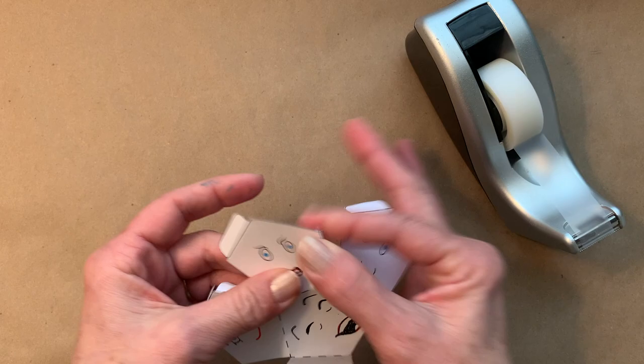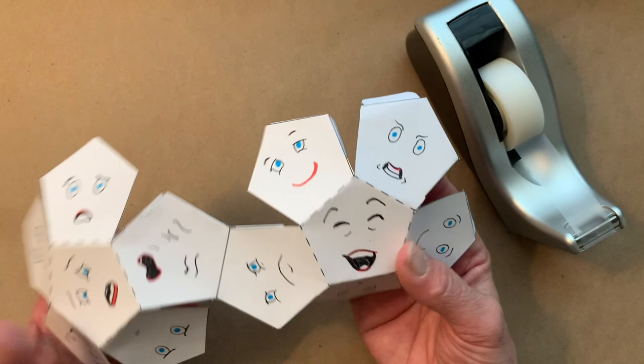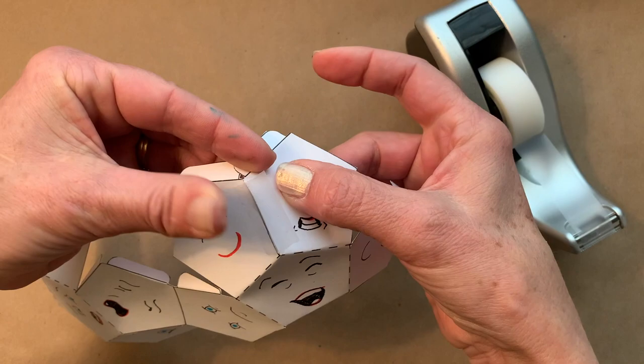All right, and now that you have your folds done and your tape ready, we're just going to tape it together. You don't need a whole lot. These little pieces of tape will do just fine, and they can go right on the seams.